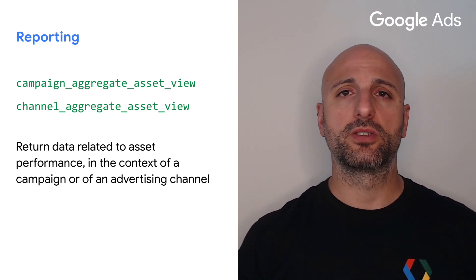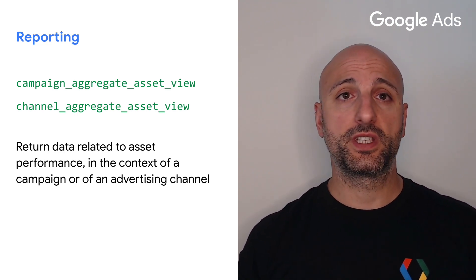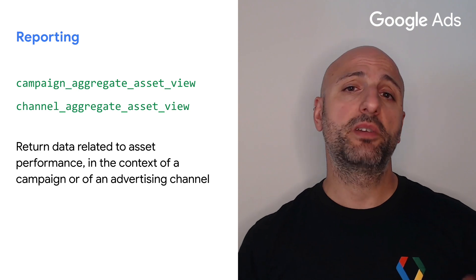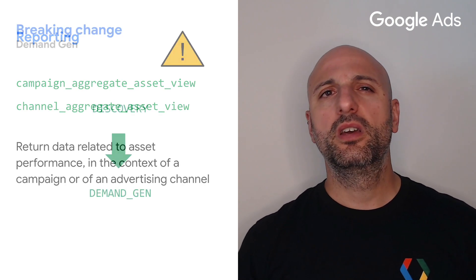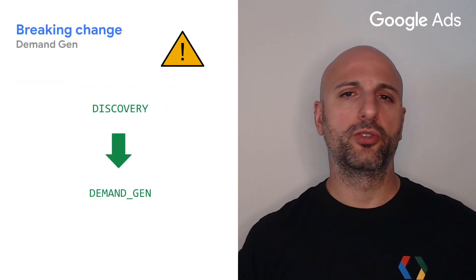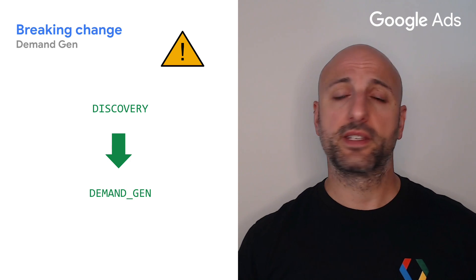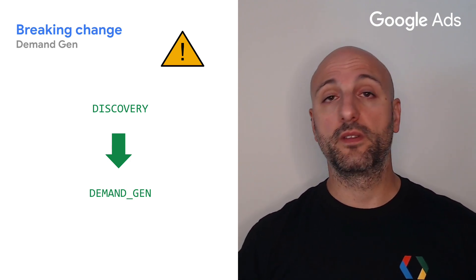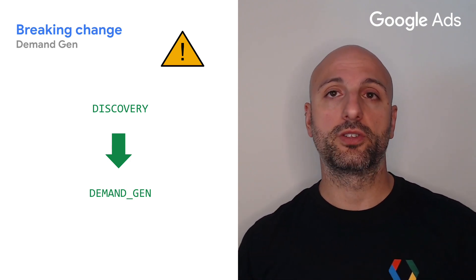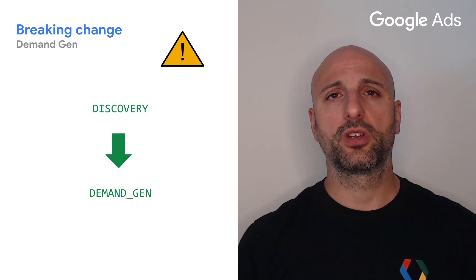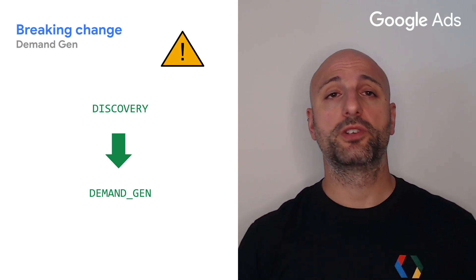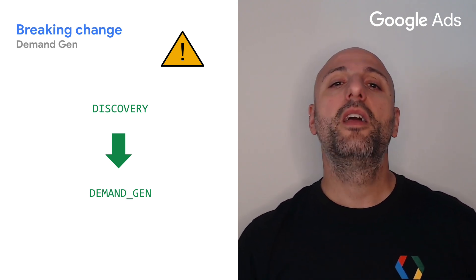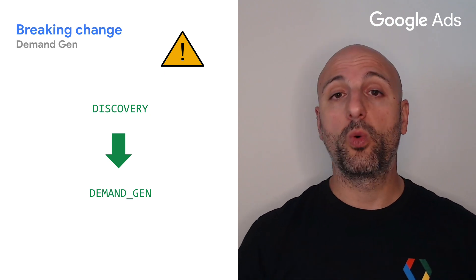Speaking of demand gen, we have a change in version 17 that's been a long time coming. Demand gen campaigns used to be referred to in the API as discovery, but now we have renamed all instances of discovery in the API to demand gen. If you were working with demand gen campaigns in the API before version 17, this is a breaking change that you need to be aware of when upgrading. We also have some changes in the conversion space.